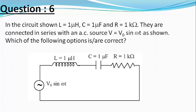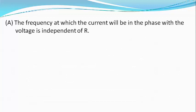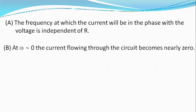Our options are option A: the frequency at which the current will be in phase with the voltage is independent of R. Option B: at angular frequency omega approximately equal to zero, the current flowing through the circuit becomes nearly equal to zero.